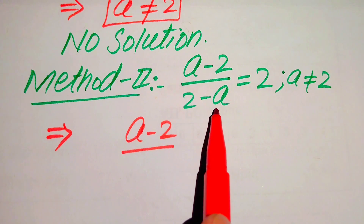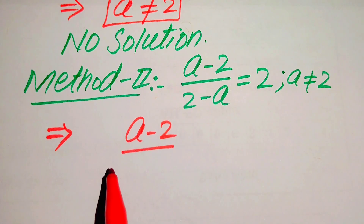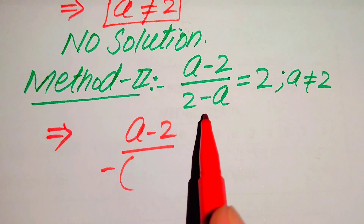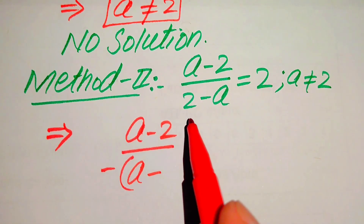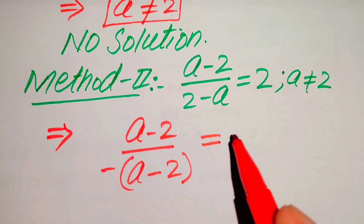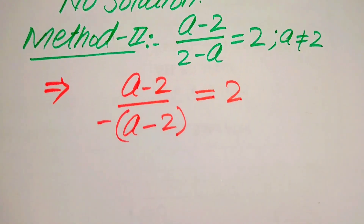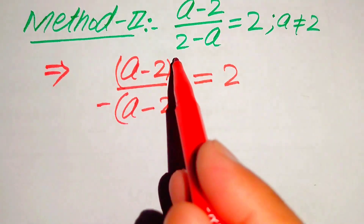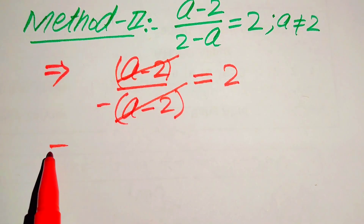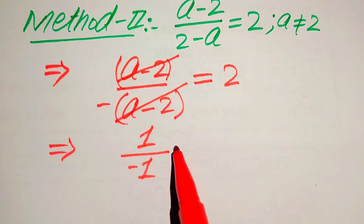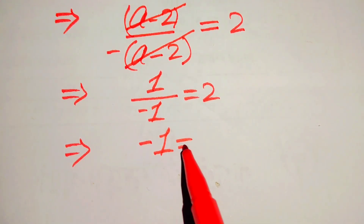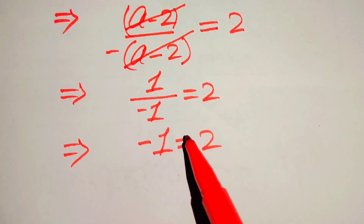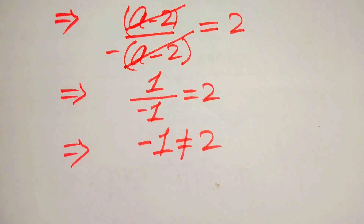In the denominator we have (2 minus a), and we take out a common minus sign from the denominator. When we do this, the negative term becomes positive and the positive term becomes negative, so minus a becomes plus a and plus 2 becomes minus 2, giving us (a minus 2) over minus (a minus 2) equals 2. The (a minus 2) cancels, and we get 1 over minus 1 equals 2, that is minus 1 equals 2, which is clearly not possible.